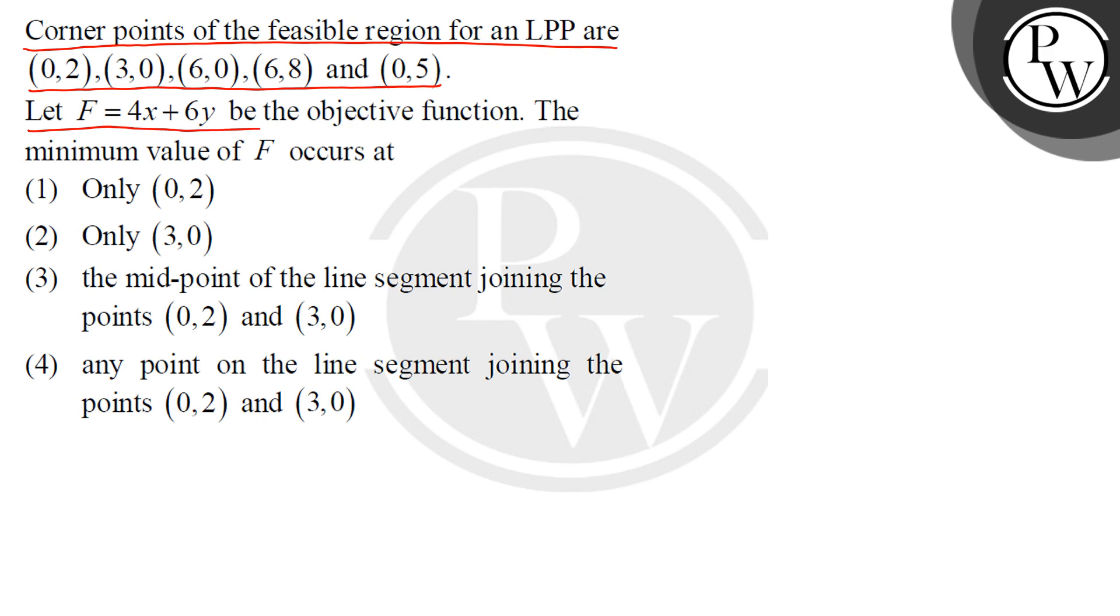Let F = 4x + 6y be the objective function. The minimum value of F occurs at: (1) only (0,2), (2) only (3,0), (3) the midpoint of the line segment joining the points (0,2) and (3,0), (4) any point on the line segment joining the points (0,2) and (3,0).